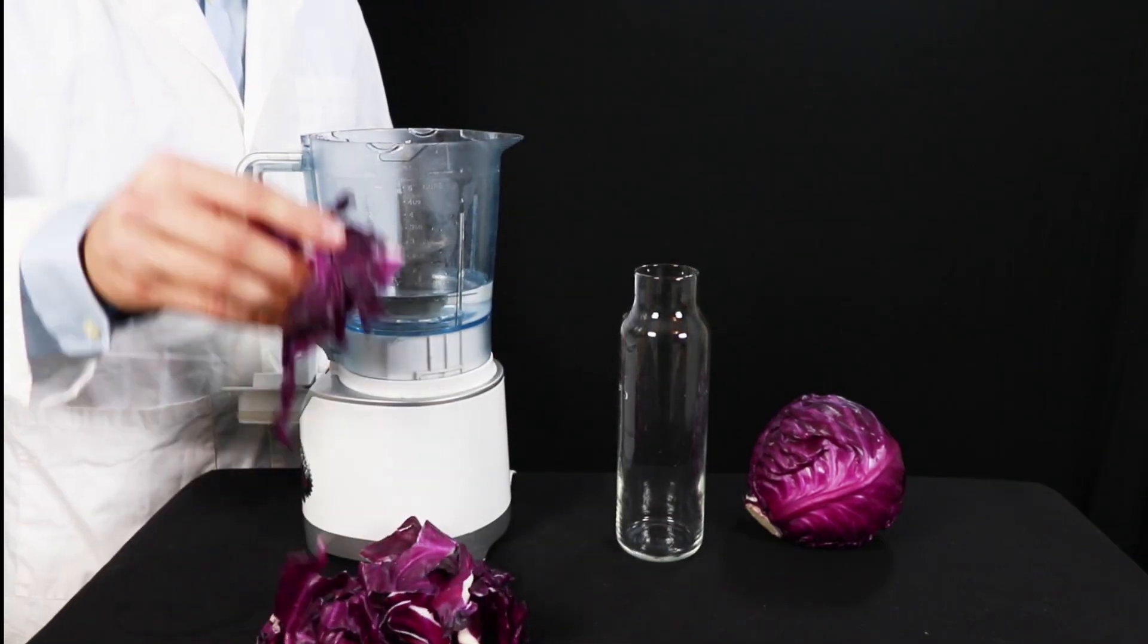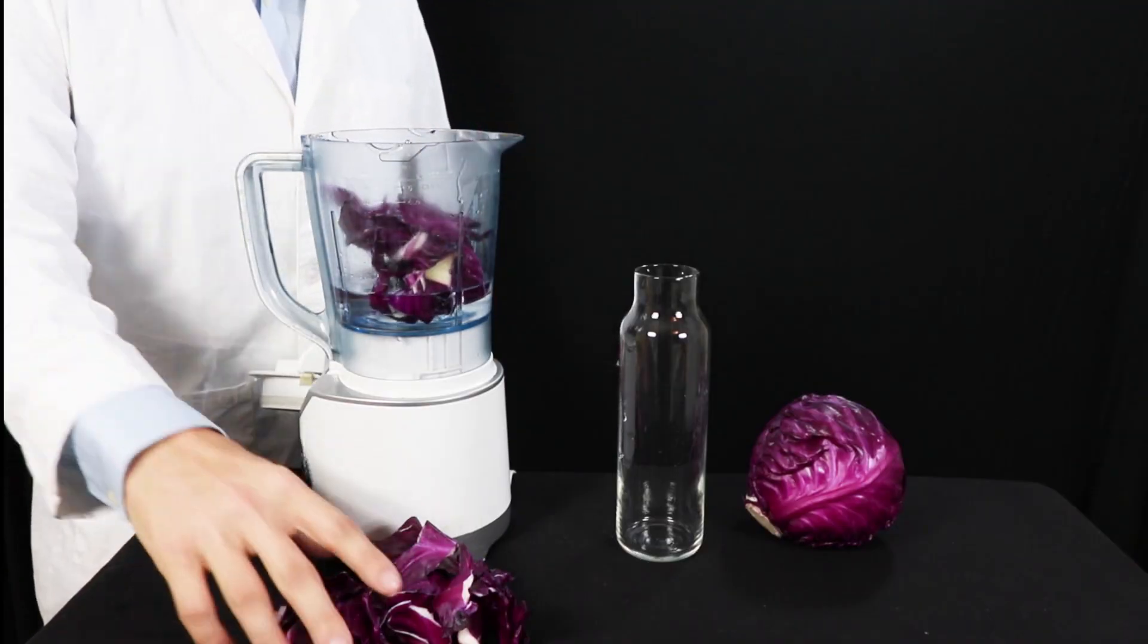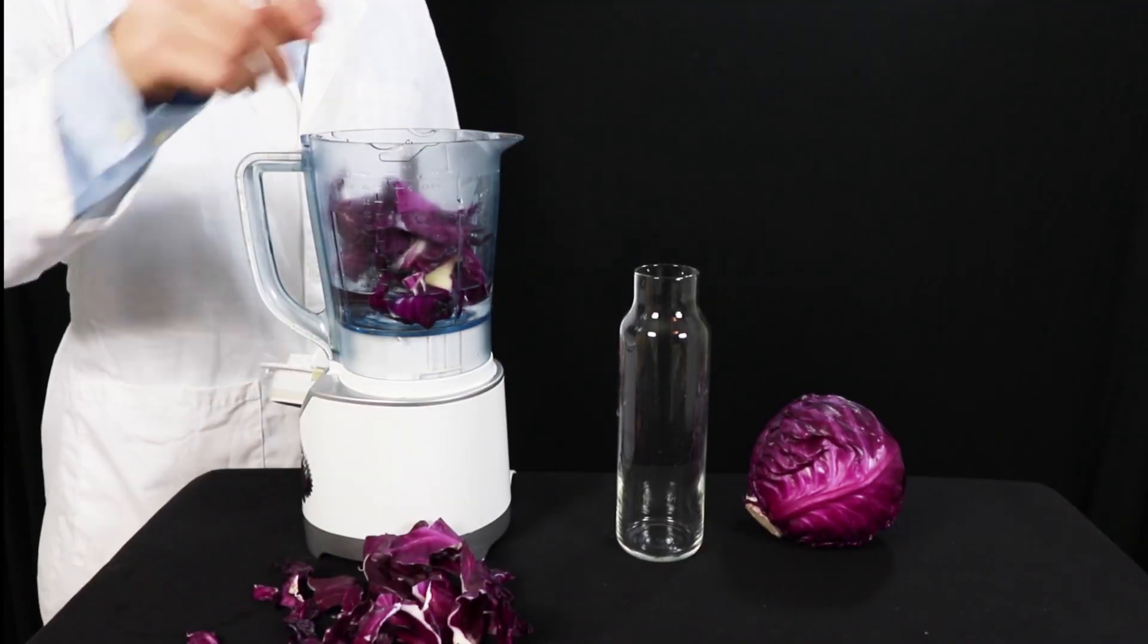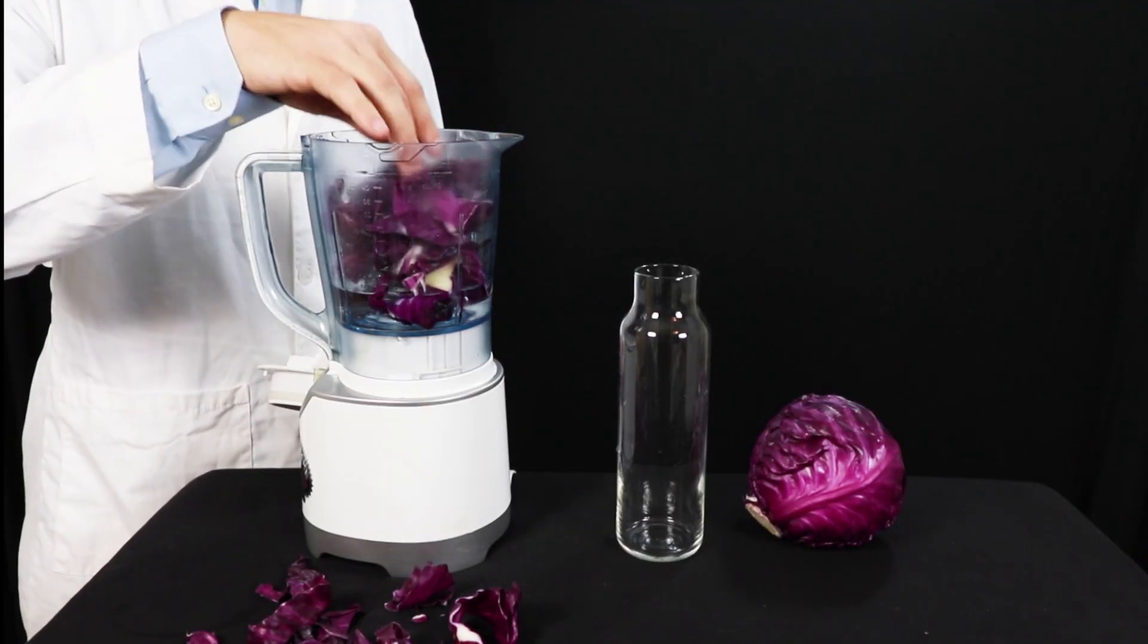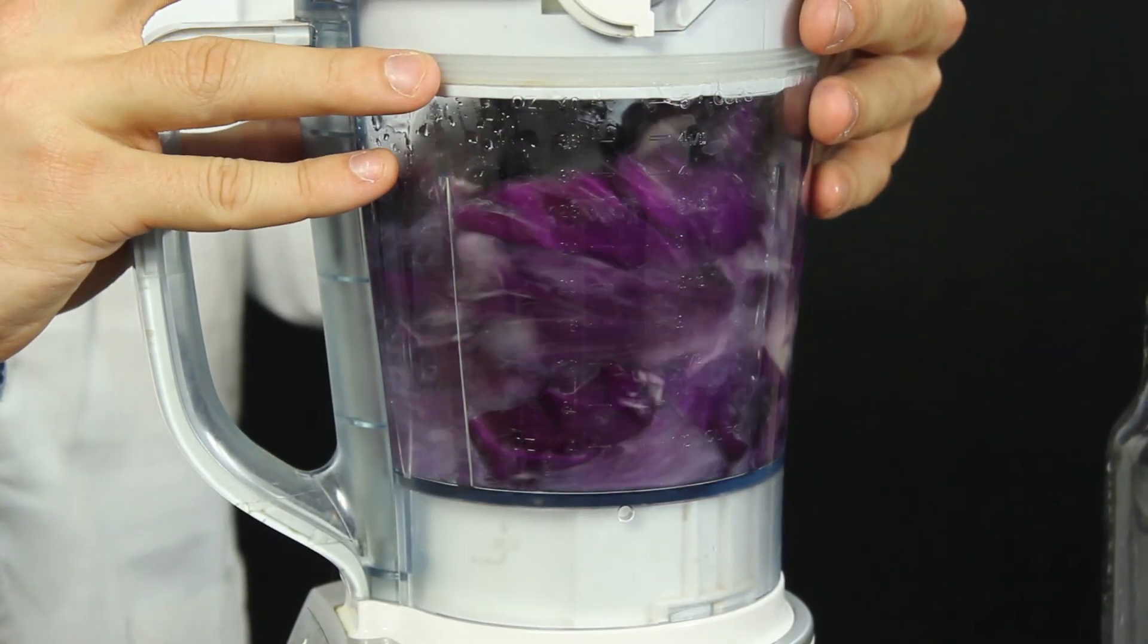Now place three to four leaves of red cabbage in the blender. Tearing the leaves into smaller sections will make it easier to blend. Turn the blender on for about 30 seconds to a minute, or until the leaves are chopped into very small pieces.